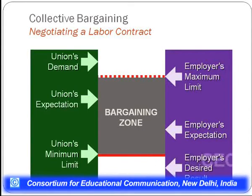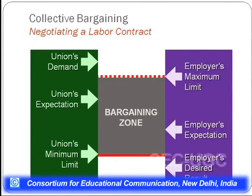Let us talk about collective bargaining and negotiating a labor contract. There is a union demand, union expectations, and a union maximum limit from the employees' point of view. The employer also has a maximum limit, expectations, and desired results. What the labor wants and what the union wants must be merged, which is called a bargaining zone. Some aspects will be taken care of for labor, some vital aspects for management, and somewhere we arrive at a broad bargaining zone. The more the bargaining zone is broadened, the better it is, signifying happiness of both parties.